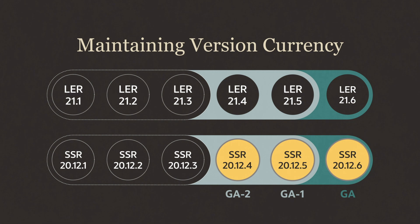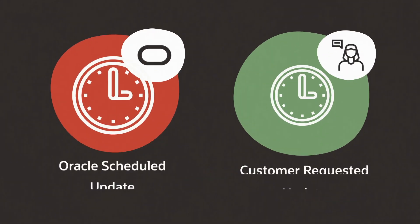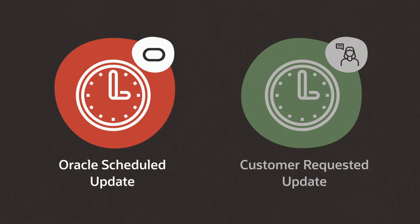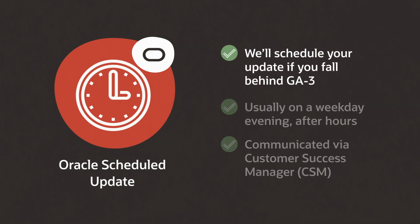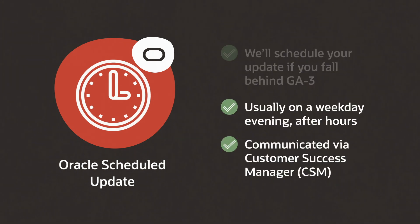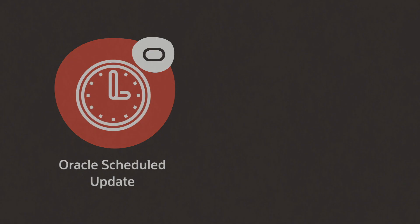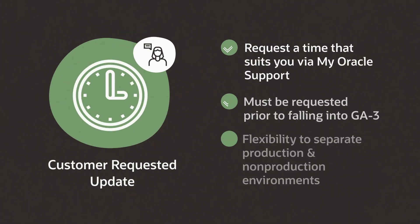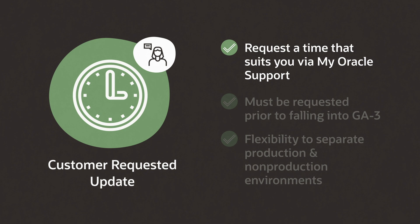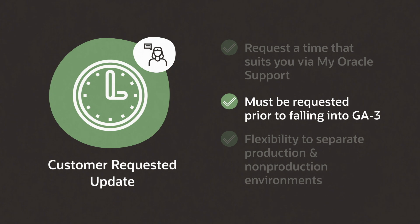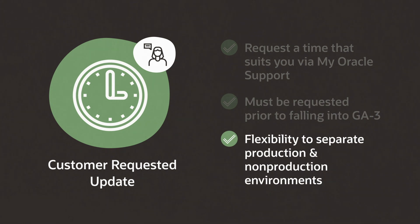So how do you maintain GA version currency? There are two ways. The first is an Oracle scheduled update — if you don't maintain version currency, we'll set a date and time to update all your environments, usually on a weekday evening after hours. Secondly, there's a customer requested update. You can request an update via My Oracle Support, as long as it's done before you're out of version currency, for example GA minus three. This option gives greater flexibility and convenience for your schedule and environment needs.